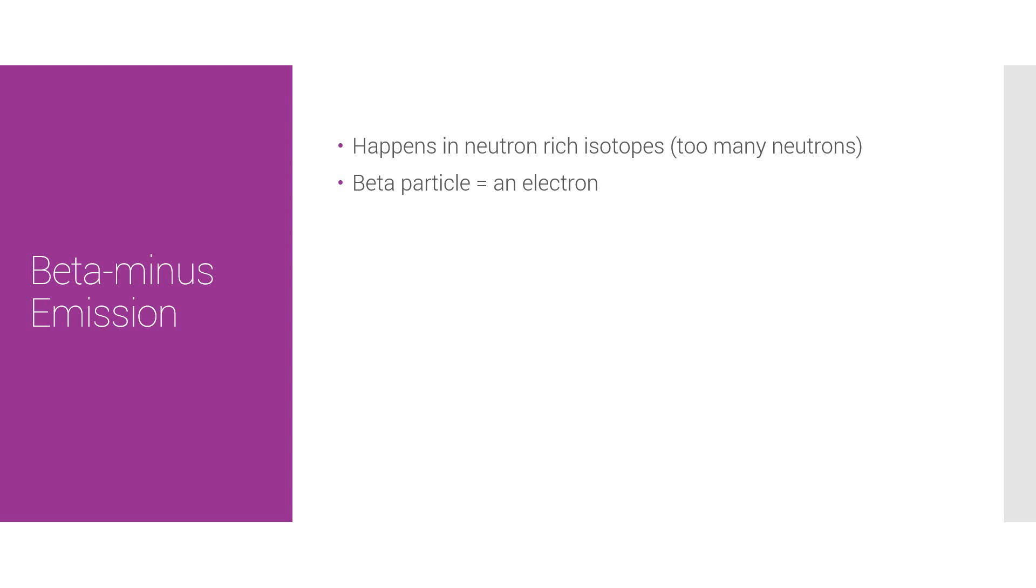It's the emission of an electron from the nucleus, along with an electron-antineutrino. Yes, a bit of a mouthful, but give me a minute. Which is released in order to conserve energy and momentum. When a nucleus ejects a beta particle, one of the neutrons in the nucleus is changed into a proton. And so the proton number as a result increases by 1, and the nucleon number stays the same.